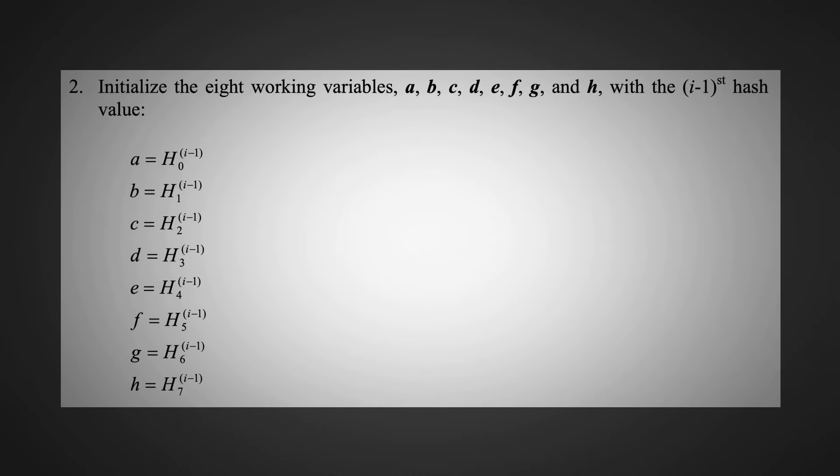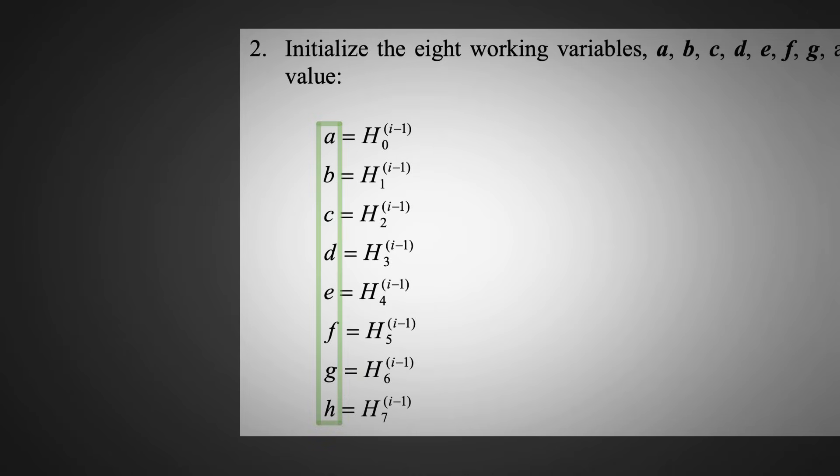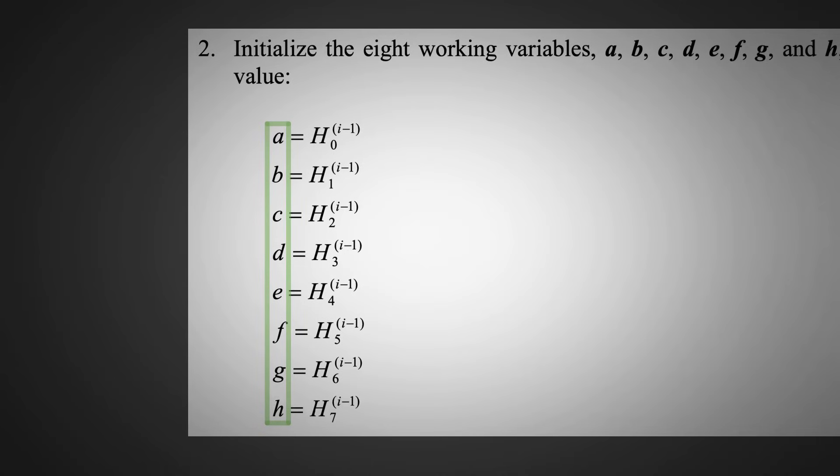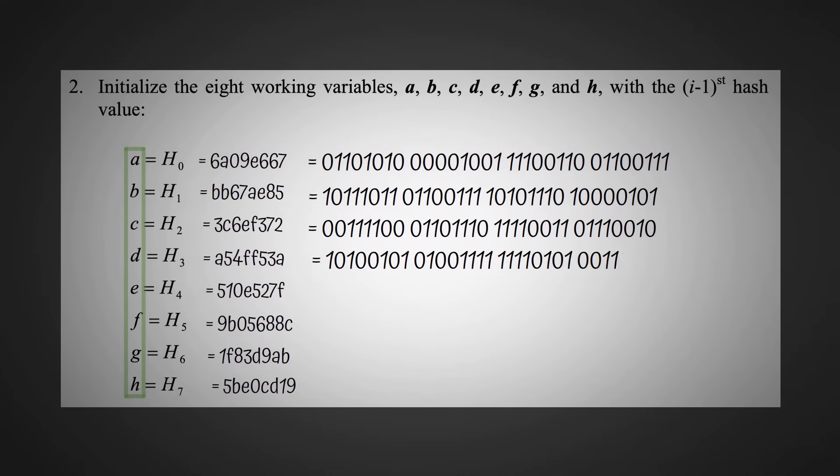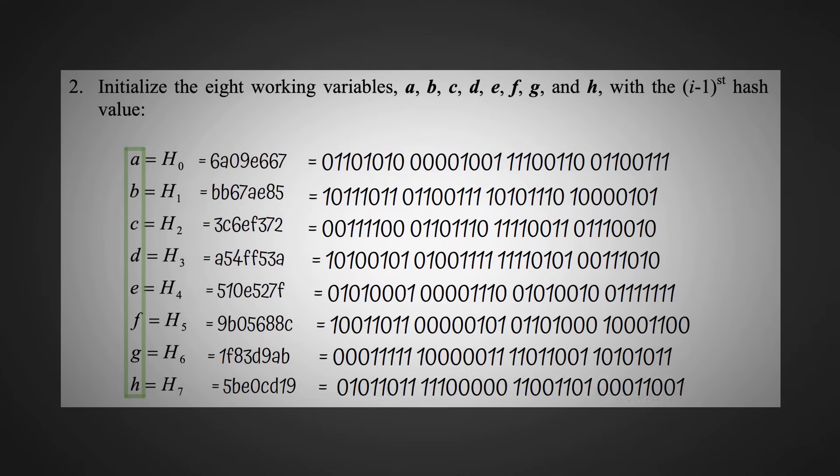This is all within the same for loop, remember. The next step, we initialize A through to H as H0 through to 7, which sounds a bit messy here right now, but it will all make sense very shortly. We don't need these superscripts. As I've mentioned a couple of times already, our capital N is 1, so we're not going to be looping through this for loop more than once. These were the values we had earlier for our H's, and this is in hexadecimal format, so we'll convert all of them into binary so we can really understand what's going on here.